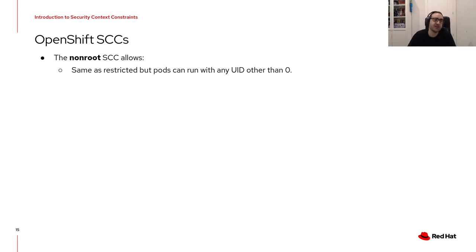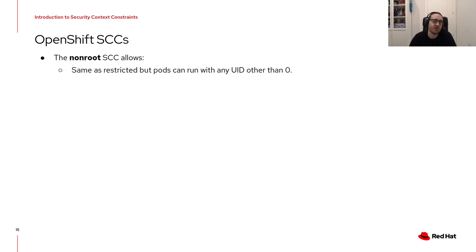The sixth is the non-root SCC. This is exactly the same as the restricted SCC, but in this case you can configure your pod to run with any UID except root (UID 0). You can think of it as the same as anyUID but you cannot use zero. This is mainly used by applications that need a predictable user that is not root and require no other special permission — for example, a Postgres database container that requires a specific user, or a container image built with a specific user that cannot be changed to the pre-allocated UIDs in OpenShift.